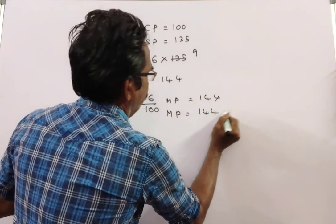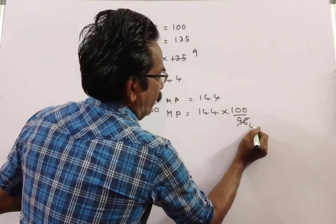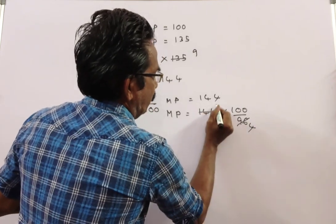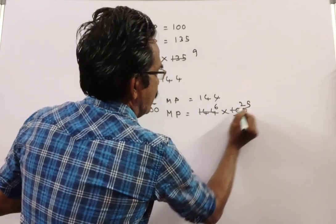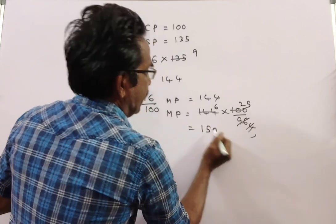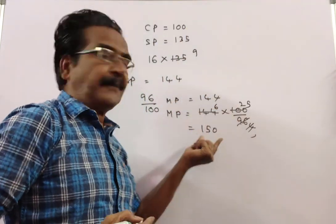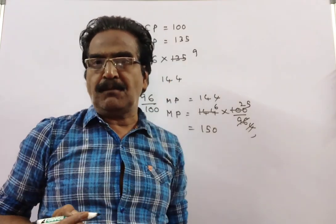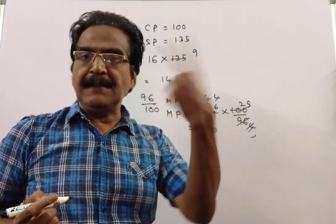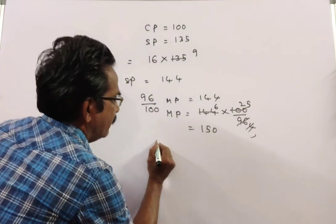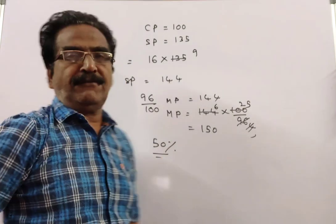So the market price is equal to 144 into 100 by 96. That gives a market price of 150. So he has to mark his goods 50 percent above the cost price. Thank you friends.